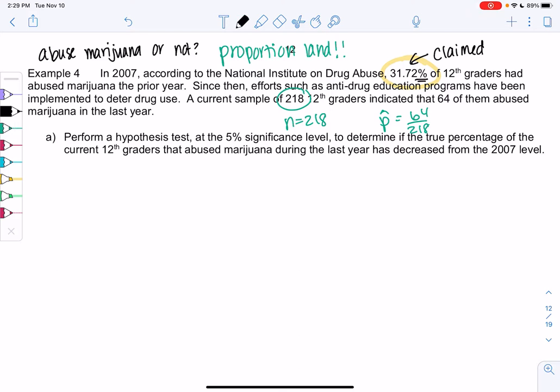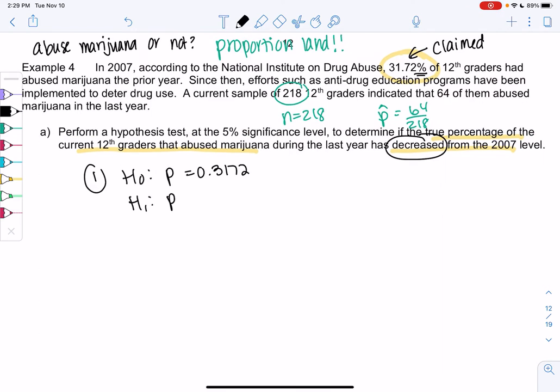So let's perform a hypothesis test at 5% to determine if the true percentage of 12th graders that abused marijuana has decreased from the 2007 level. So people are maybe curious if this program is working or not. We're in proportion land, so my hypothesis involves P. The claim value is 0.3172, and decreased means less than. So if we can get that number less than 31%, then maybe we can prove the program is working.